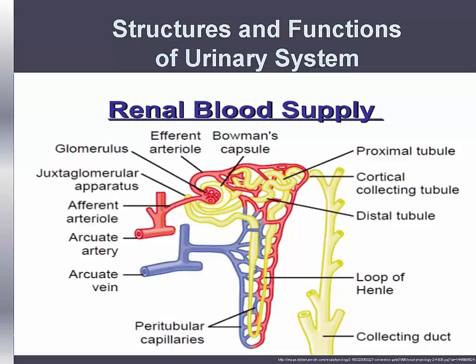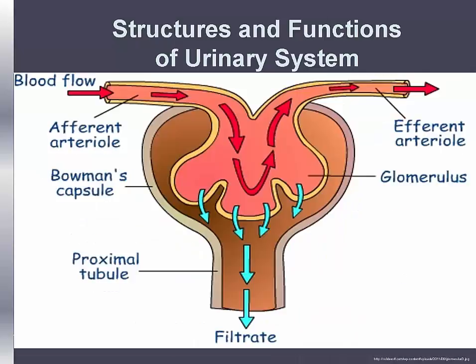The kidney's blood supply comes from the renal artery and arises from the aorta. It divides into smaller branches and each forms an afferent arteriole. Afferent arterioles divide into a capillary network called the glomerulus. Blood flow to the kidneys is approximately 1,200 mLs a minute and accounts for 20% to 25% of the cardiac output.